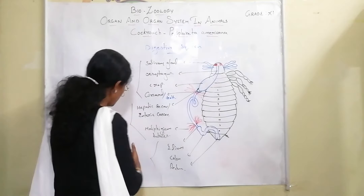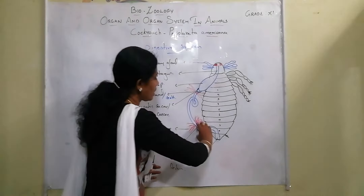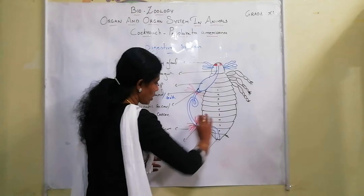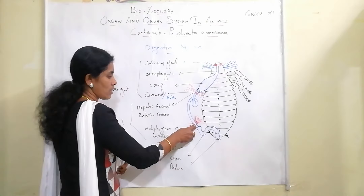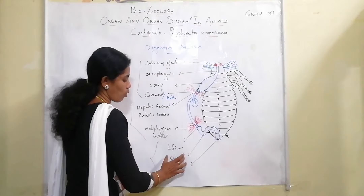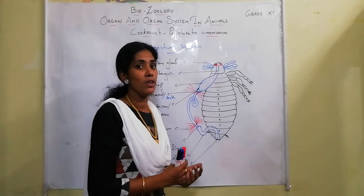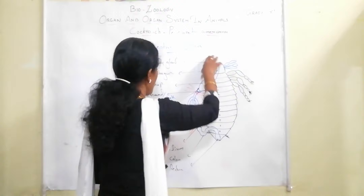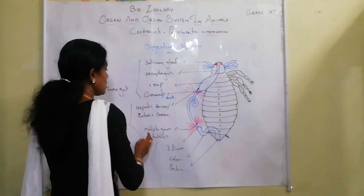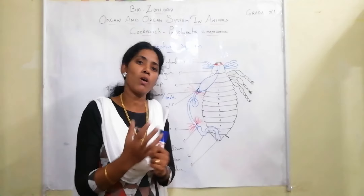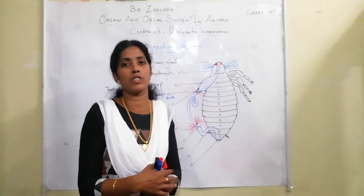The hindgut is broader than the midgut and is divided into three parts: ileum (beginning), colon (central region), and rectum (end). Regarding glands, there are salivary glands, and the midgut region also has glandular cells secreting substances. The hepatic caeca also secretes substances. All these aid in digestion of food substances.